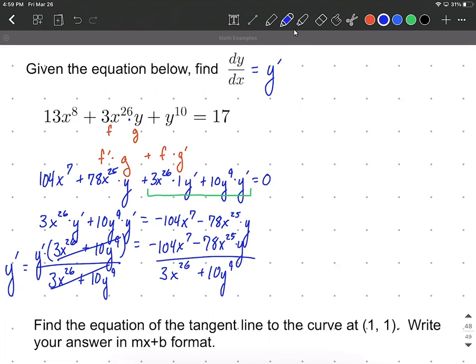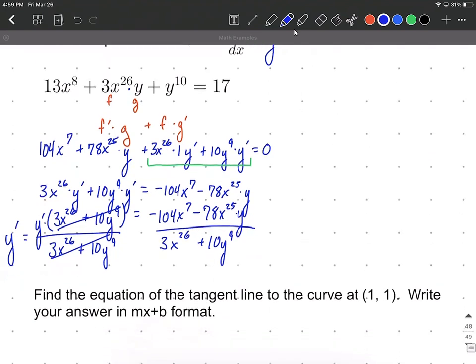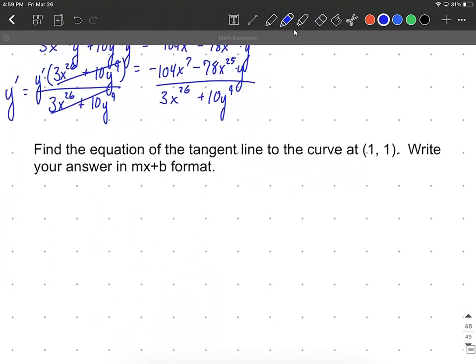Now, a follow-up to this one is we want to find the equation of the tangent line to the curve, this curve that we've been working with, at the ordered pair (1, 1). And we're going to write this answer in the form mx plus b, so standard equation of a line.